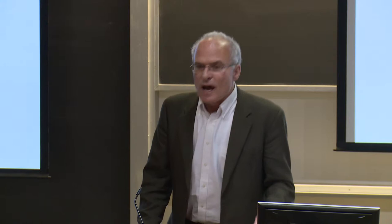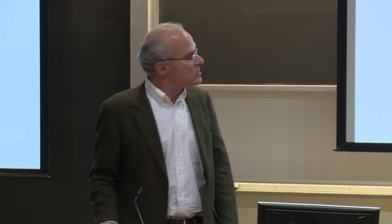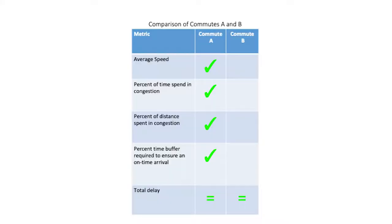Let's take the standard methods of transportation planning and transportation engineering and evaluate these two commutes. Who has the better average speed? Commuter B. Who has lower percent time spent in congestion? Commuter B. Who has lower distance spent in congestion? Commuter B. Who needs to leave less of a time buffer required to ensure an on-time arrival in percentage terms? Commuter B. These are all the core metrics of transportation planning and transportation engineering.